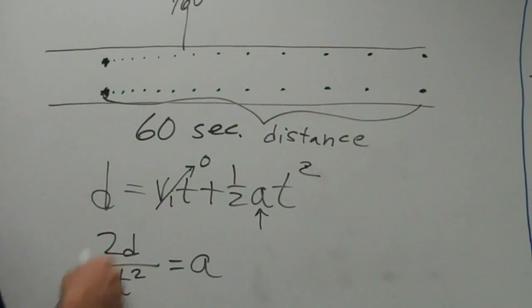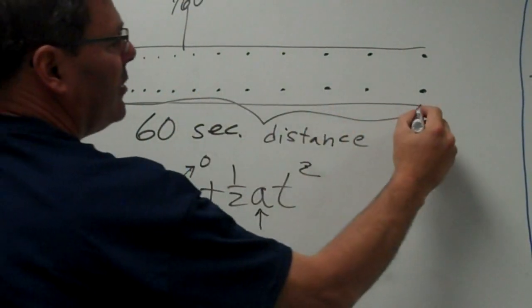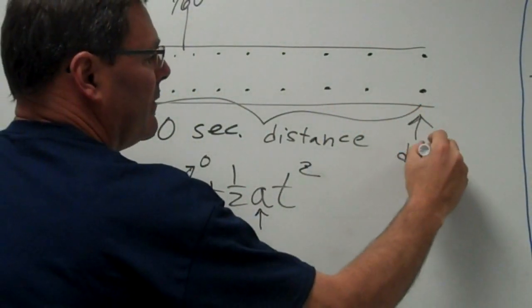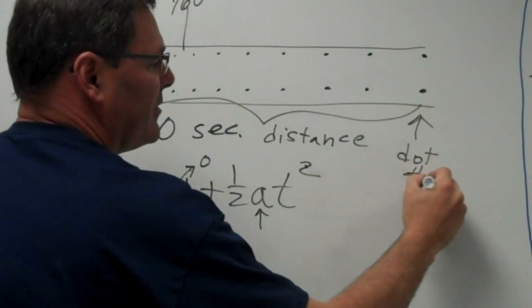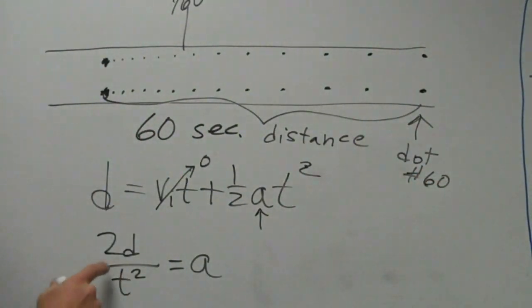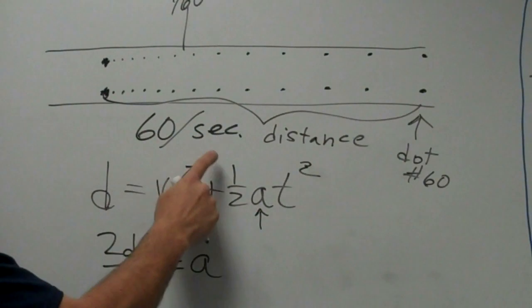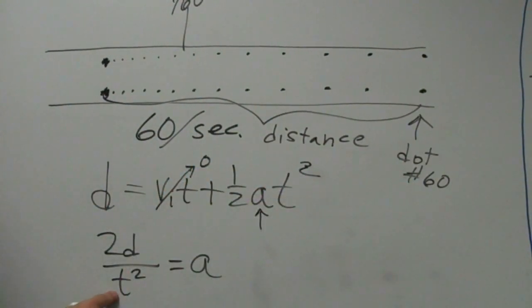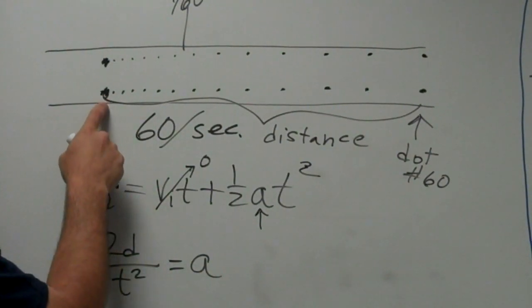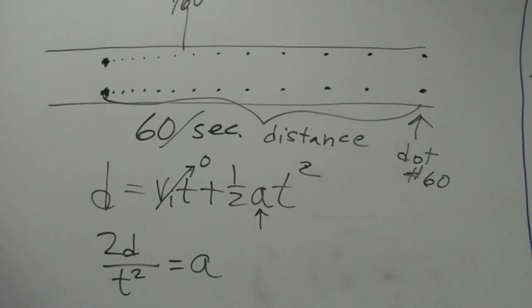So to make it simple, count out to dot number 60. That way we know because 60 dots are generated every second. If I go to dot 60, then this time will be one second. And then I just measure the distance from my cluster of dots out to dot number 60. And that's this distance. Multiply it by two and that'll give me my acceleration for this trial.